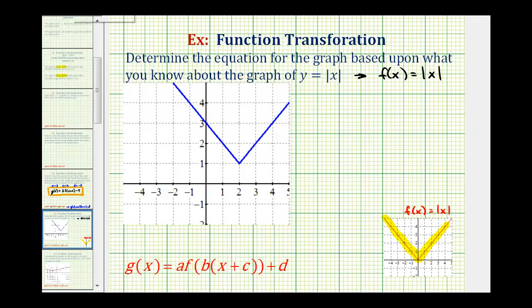So the first step is to determine how the blue graph has been transformed from the red graph. The first thing we should recognize is that the v-shape is still the same shape, meaning it has not been vertically stretched or compressed, or horizontally stretched or compressed. Another way to know this would be to recognize that the right side of the graph of the absolute value function would have a slope of positive one, and on the left, the slope would be negative one.